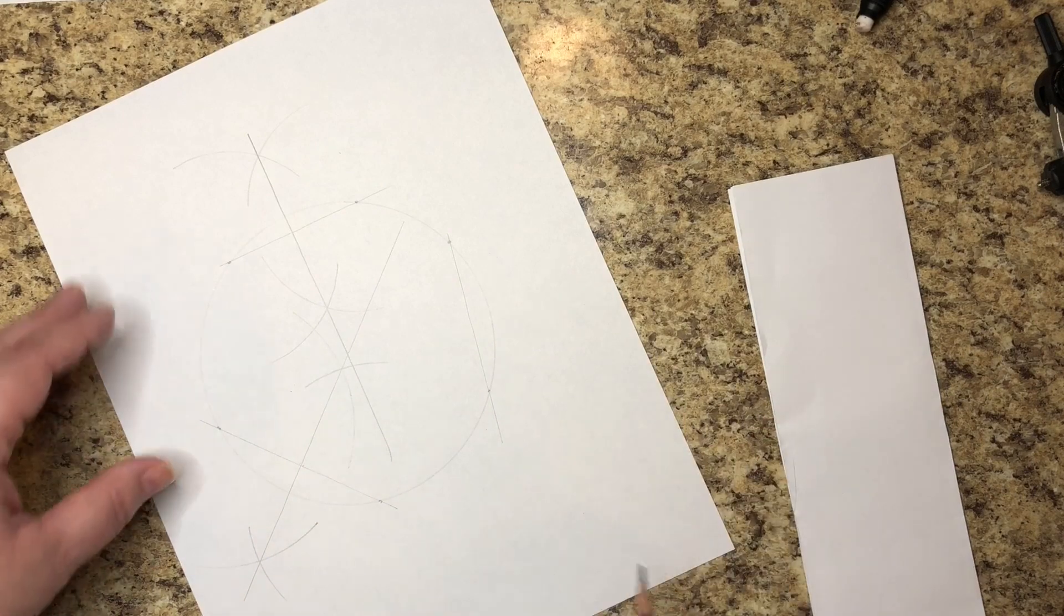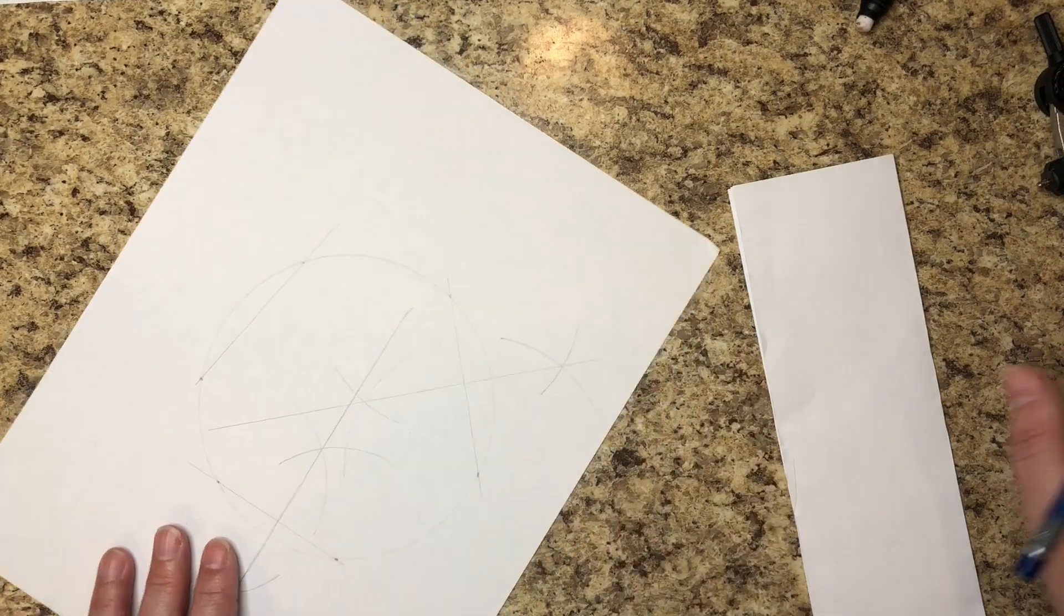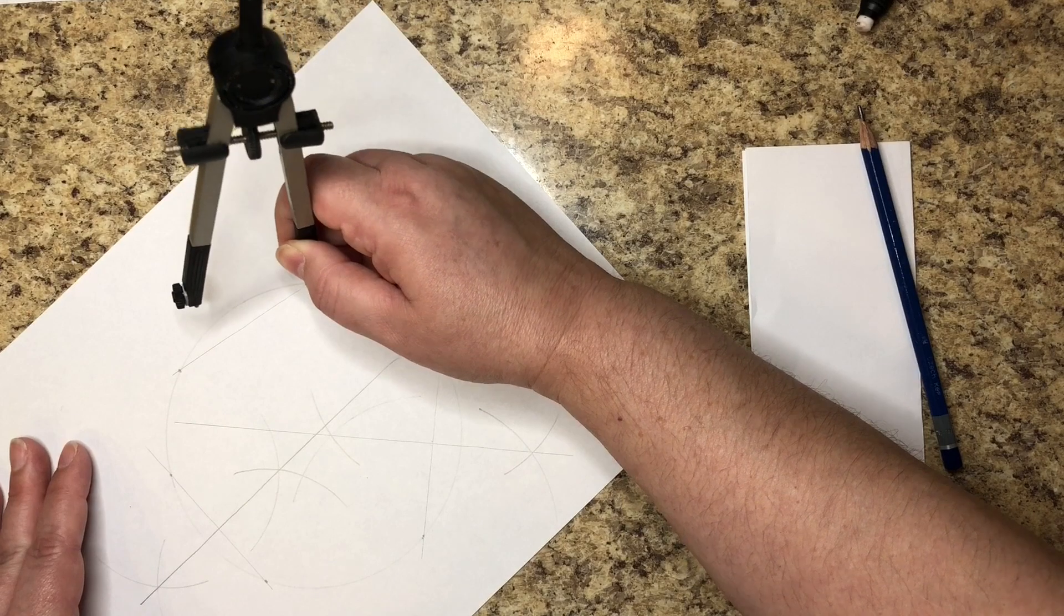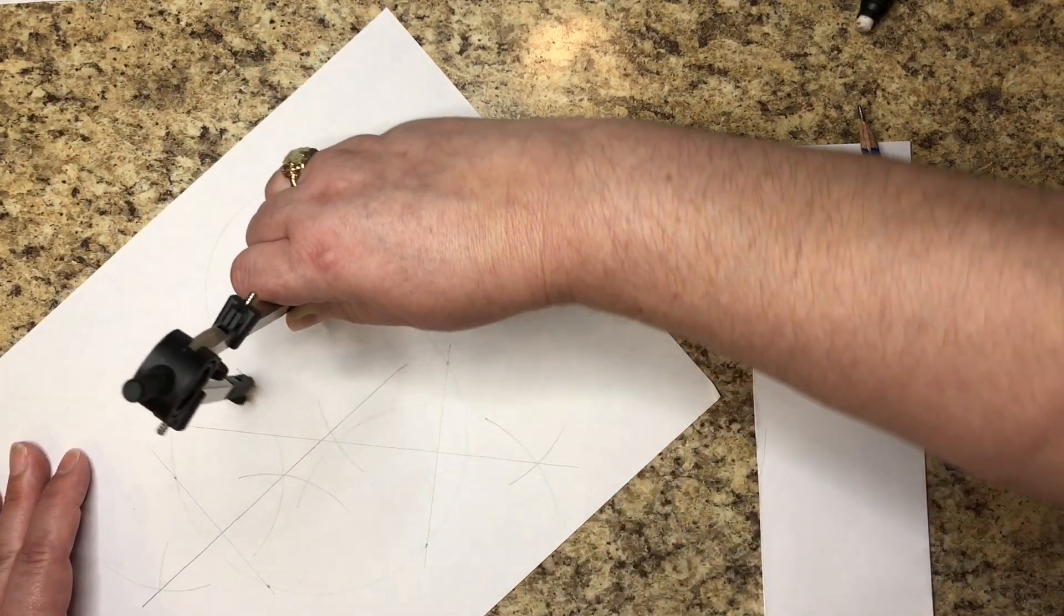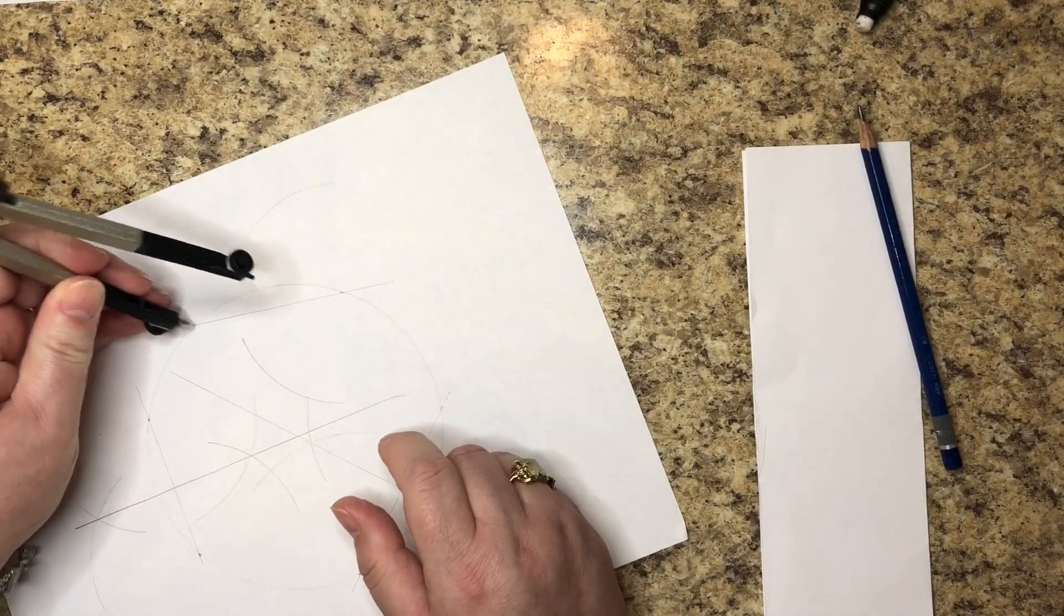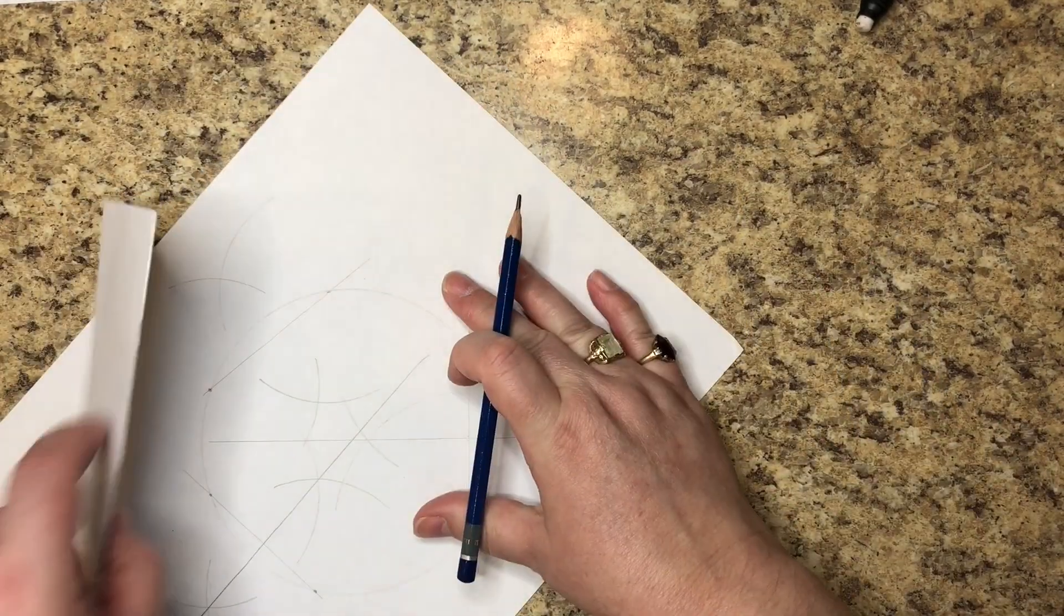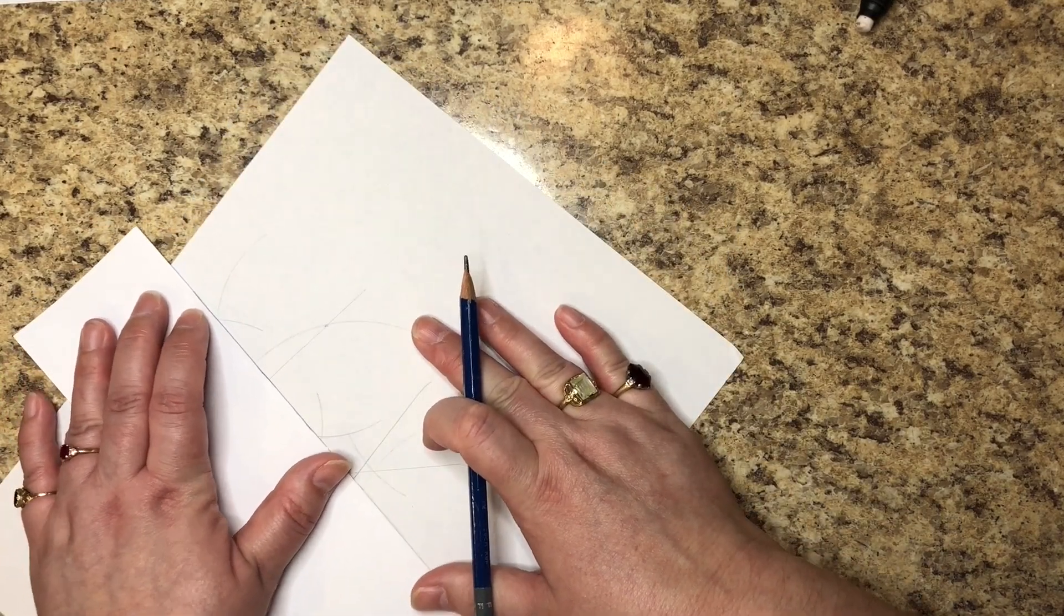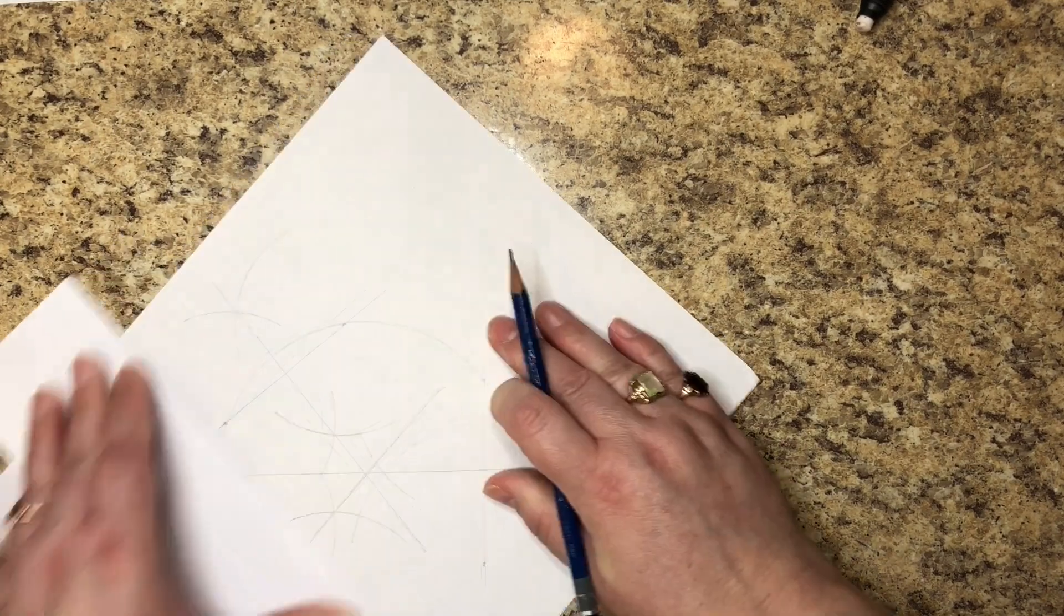Now you can stop here because this will give you what you need, but I always like to go for the third line just to double check myself and I'll show you why in a minute. We're going to do our last line. Arc above, arc below, arc above, arc below, arc above, arc below. Let's line them up.